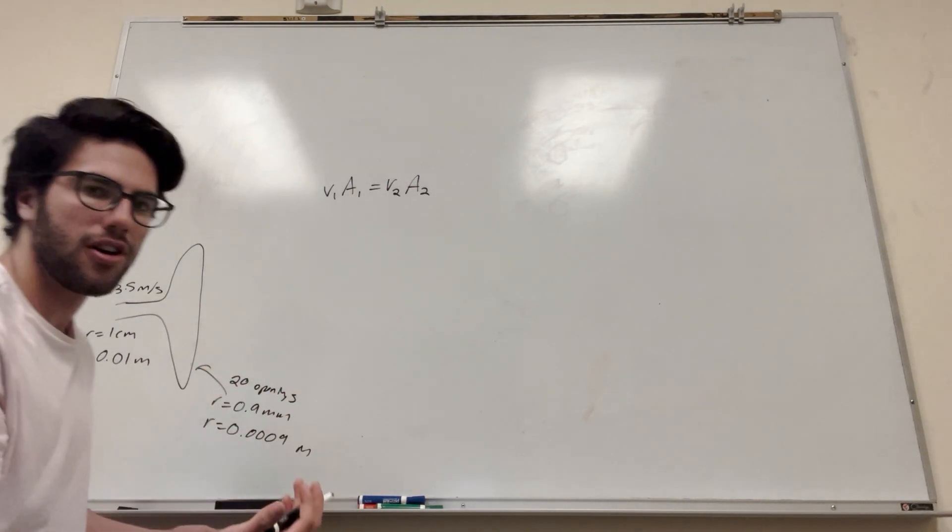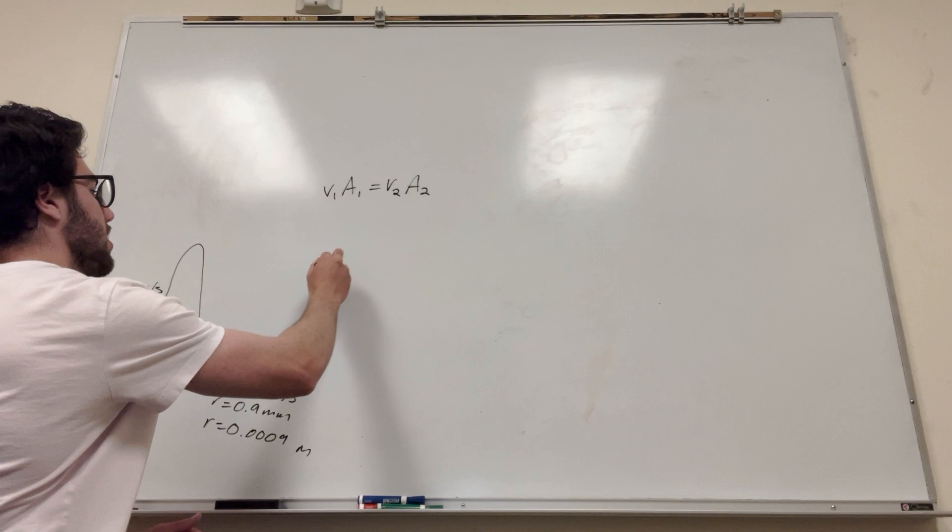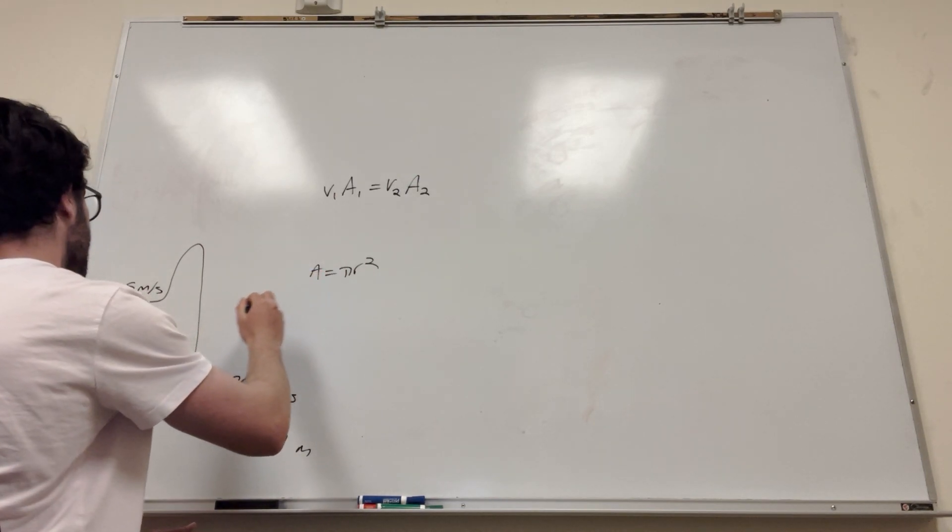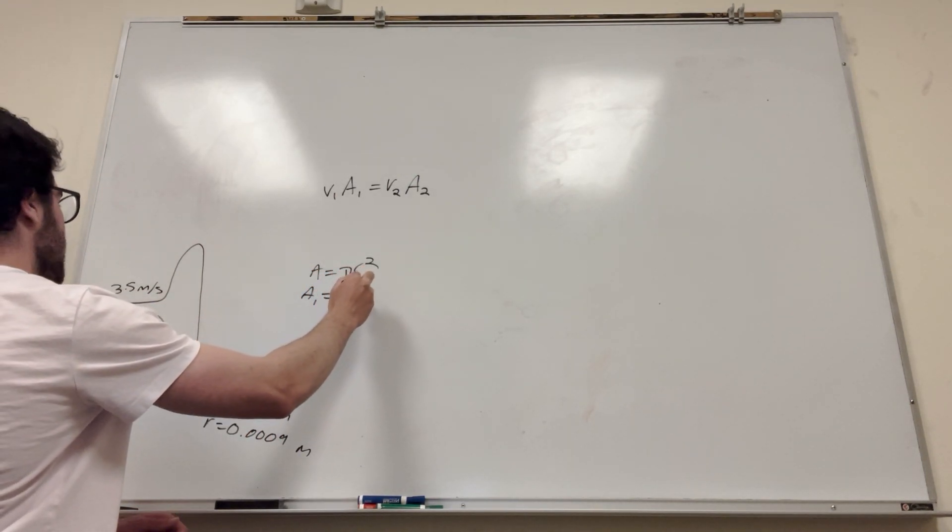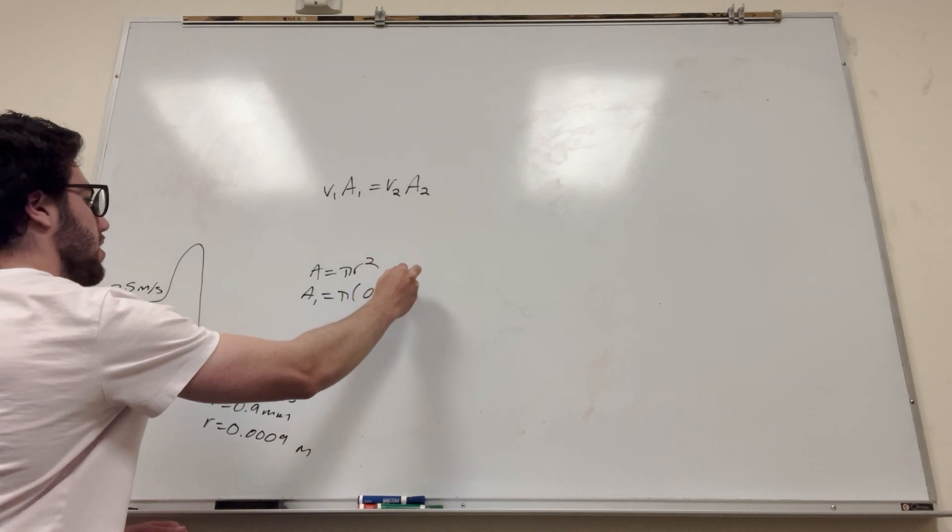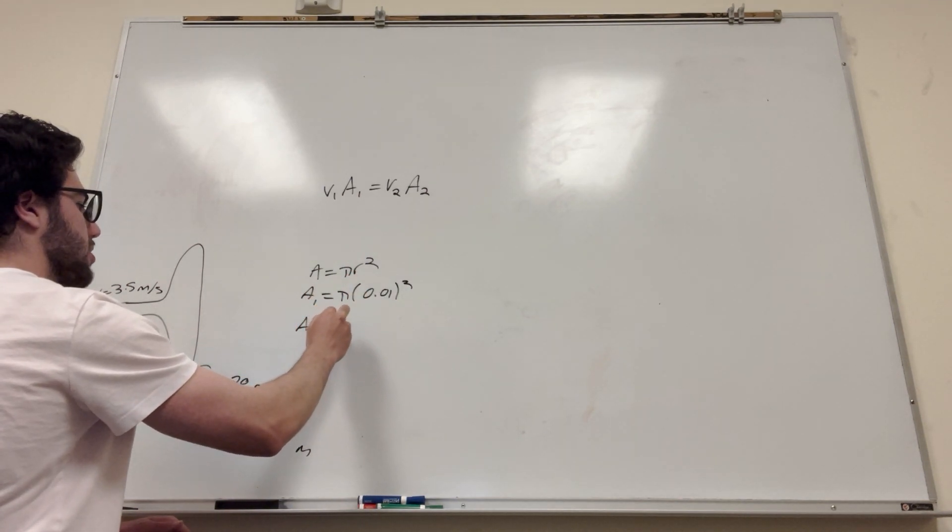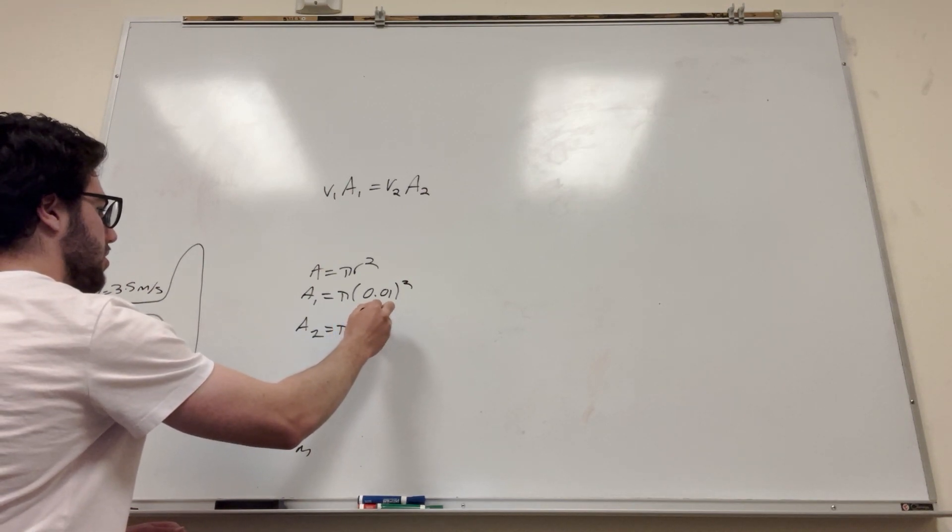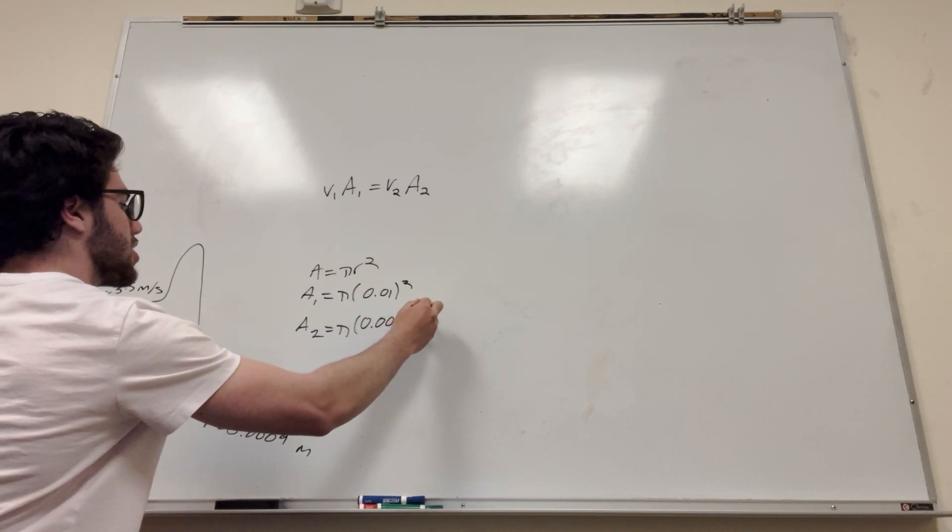Okay, so there's circular openings. So we know that the area of the circle is pi radius squared. So we can say that area 1 is equal to pi 0.01 squared. And the area of 2 is equal to pi 0.0009 squared.